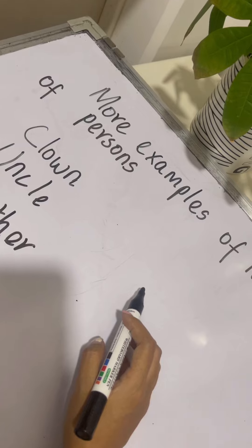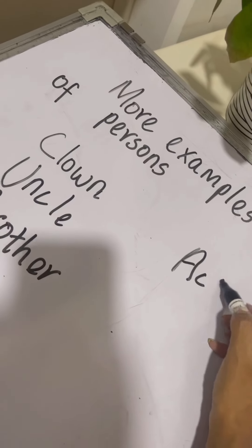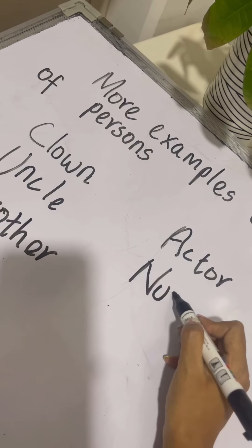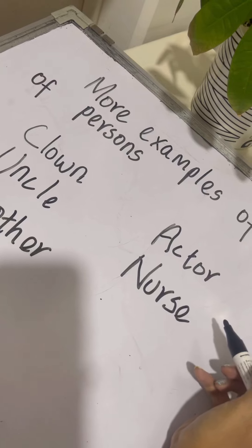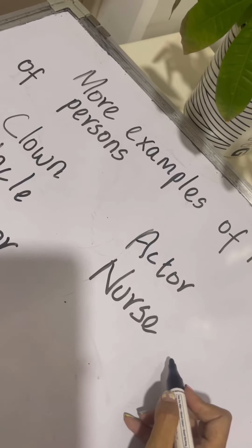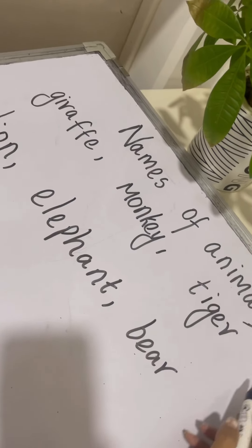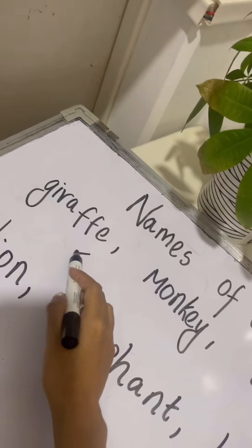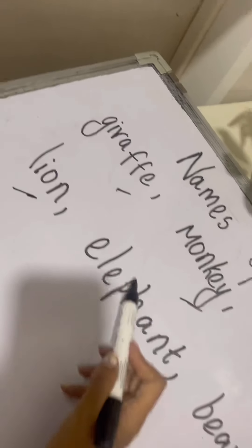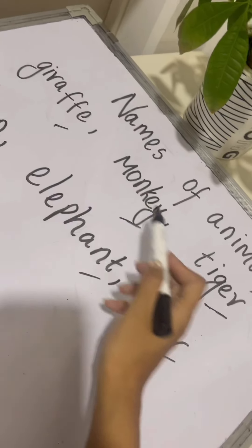Can anyone give me more examples? These are all examples of names of persons. Now, let us take a look at the names of animals: giraffe, monkey, tiger, lion, elephant, bear. These are all names of animals.